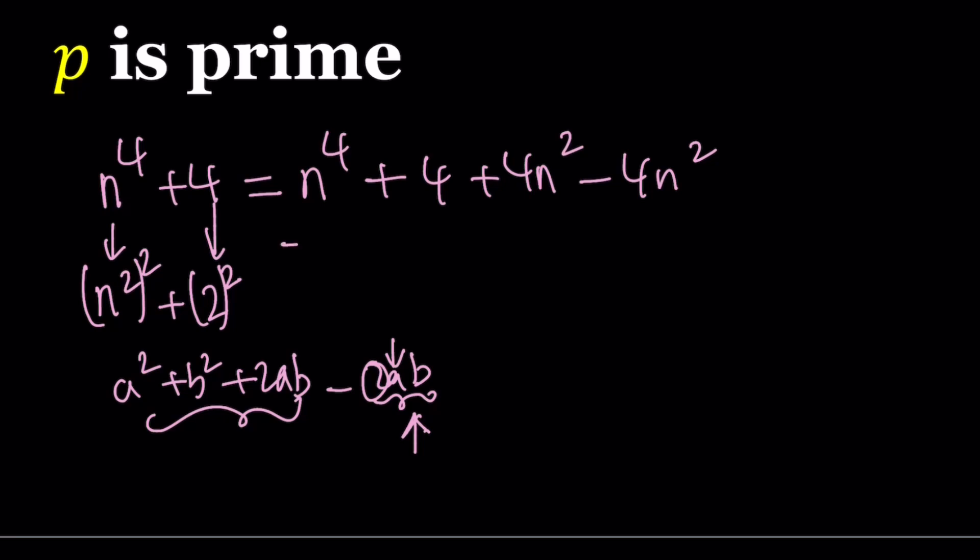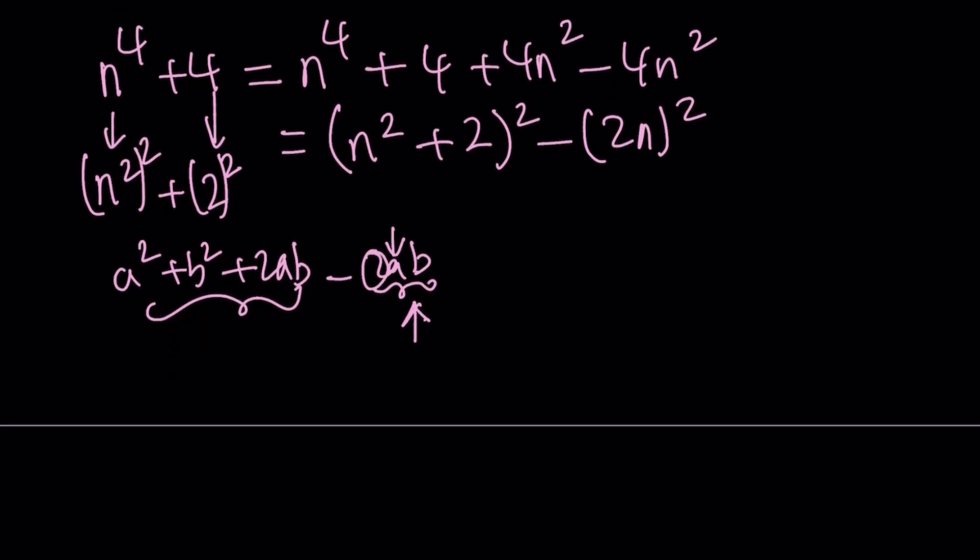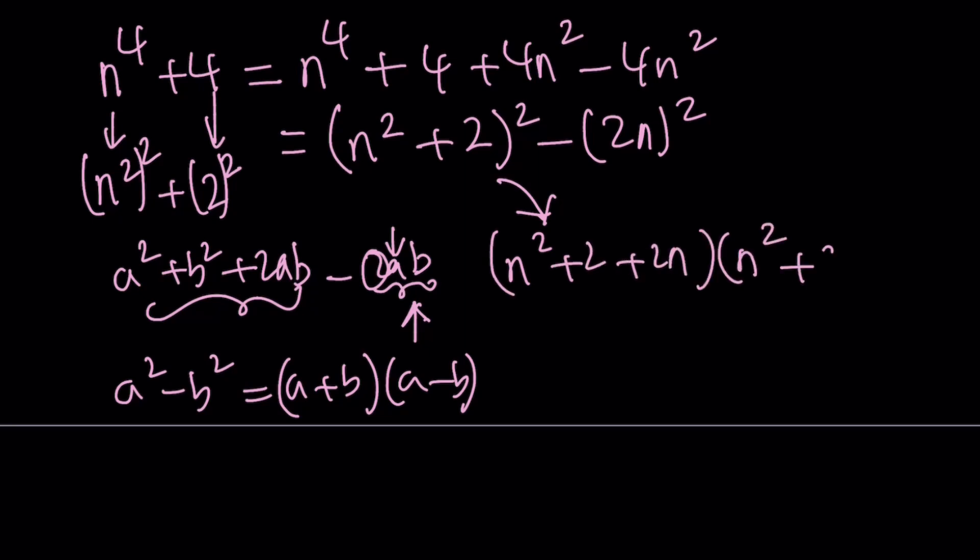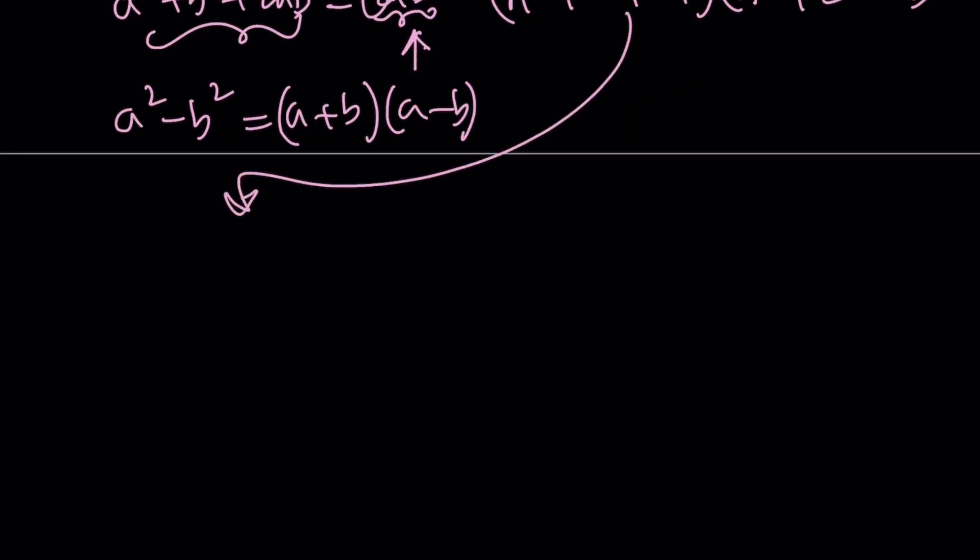So here's what it's going to look like. This is n squared plus 2 squared, and this is 2n squared. Make sense? Now this is a difference of two squares. So we can go out and factor it. Remember, difference of two squares, a squared minus b squared, can be written as a plus b, multiply by a minus b. That's what we're going to use. So I'm going to write it as n squared plus 2 plus 2n, and then n squared plus 2 minus 2n.